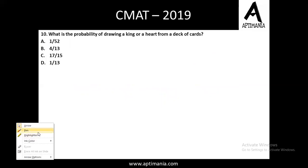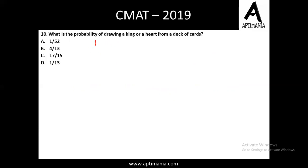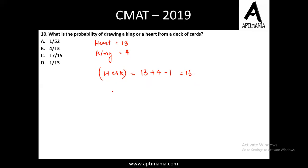Question number 10 is from probability. What is the probability of drawing a king or a heart from a deck of cards? Hearts: 13 cards; Kings: 4 cards. Using inclusion-exclusion: 13+4−1 = 16 (subtracting the king of hearts counted twice). Probability = 16/52 = 4/13. The correct answer is option B, 4 by 13.